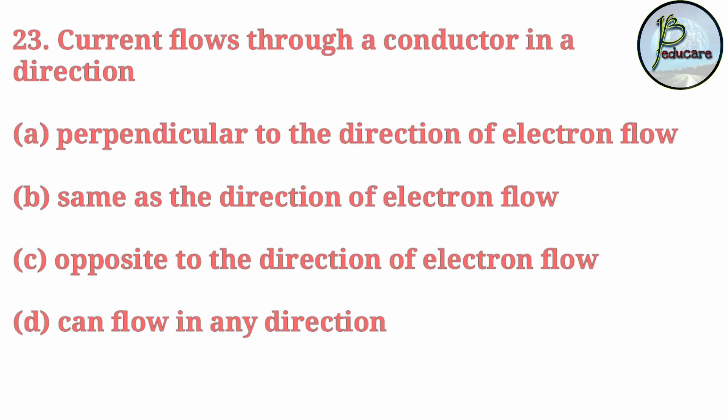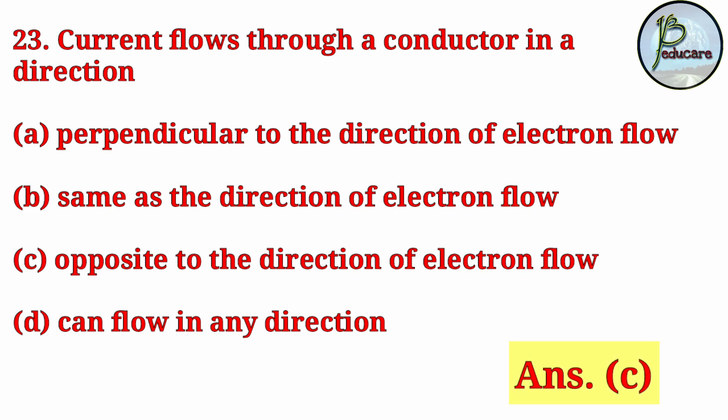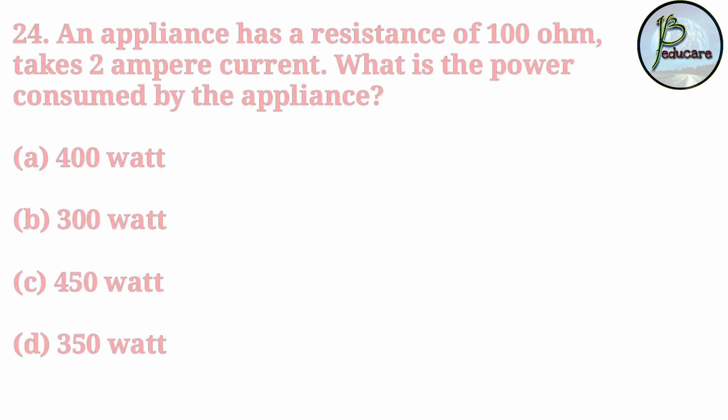Next question: Current flows through a conductor in which direction? The correct answer is C, opposite to the direction of electron flow. The direction of current flow is opposite to the direction of electron flow.